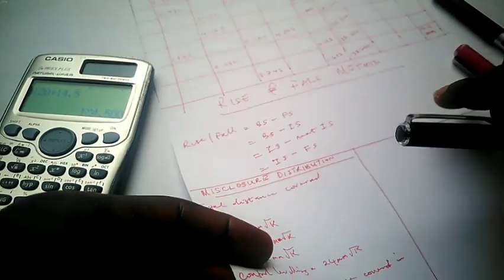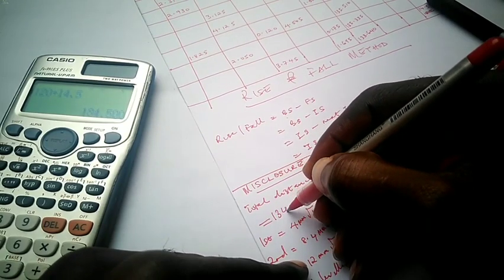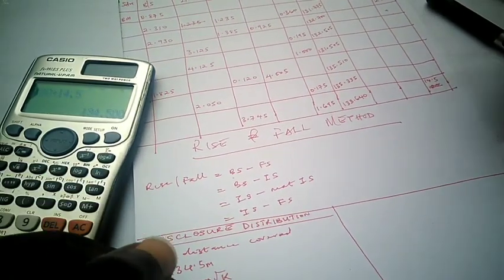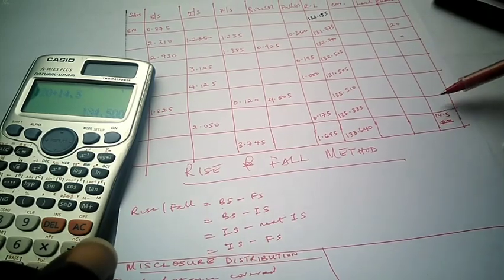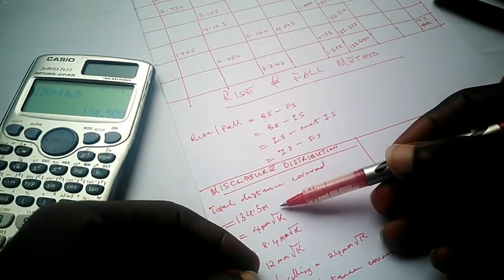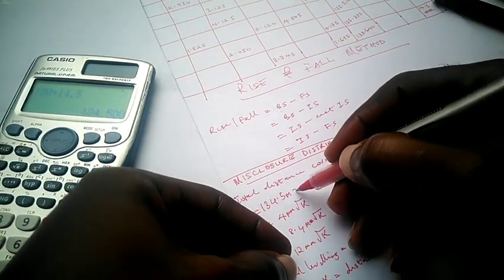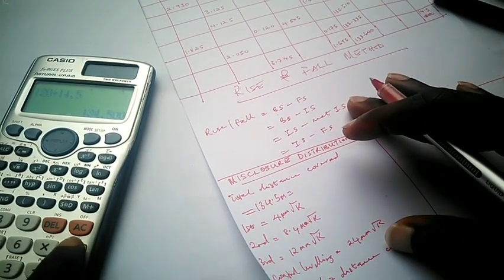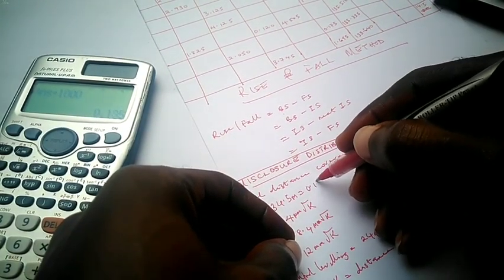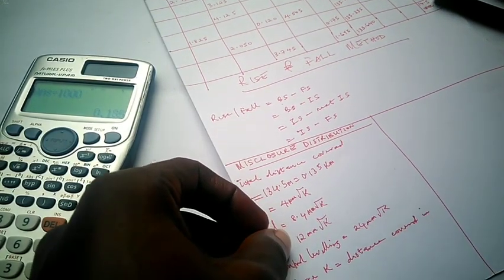So the total distance covered during this leveling exercise was 134.5 meters. On the formula, k is the total distance in kilometers, so we need to convert this value. Dividing 134.5 by 1000, we get 0.135 kilometers.